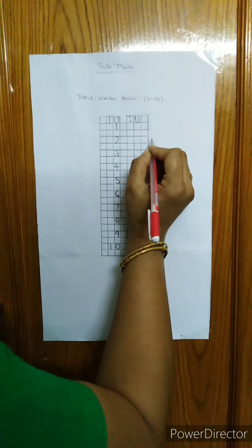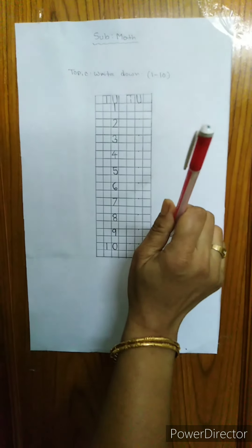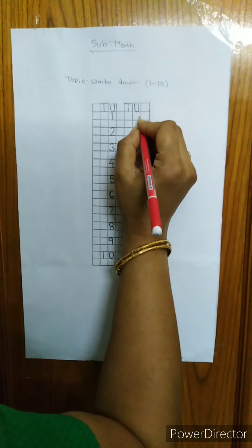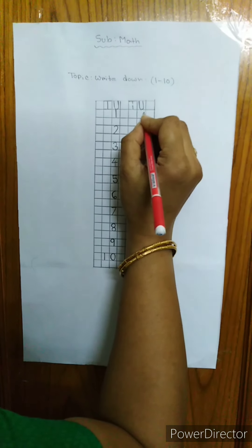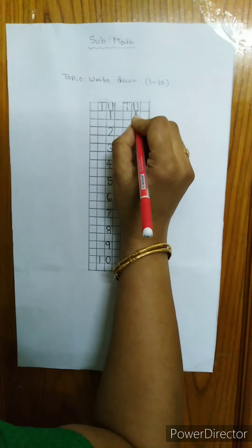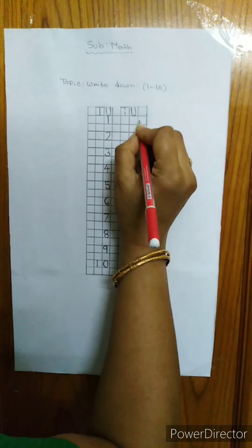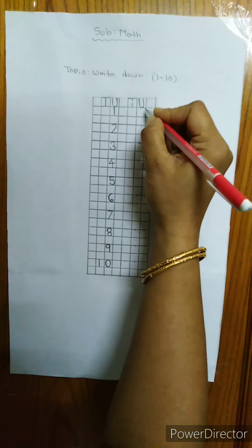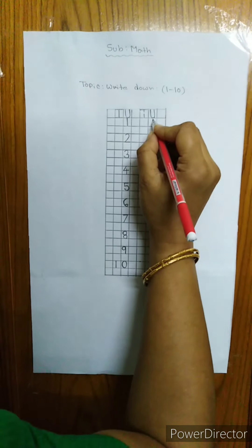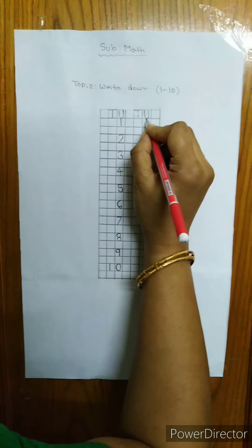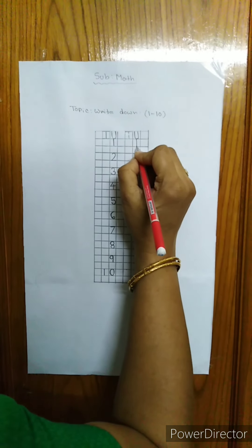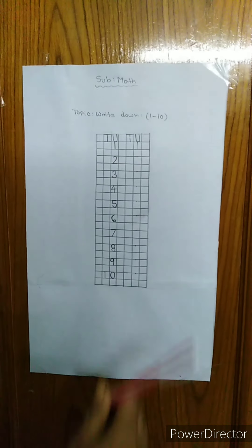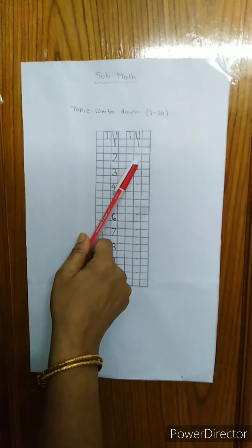At first, I will write 1 — only a long straight line. This is the starting point. I will write 1: a long straight line, up line to down line. This is 1. Say 1.